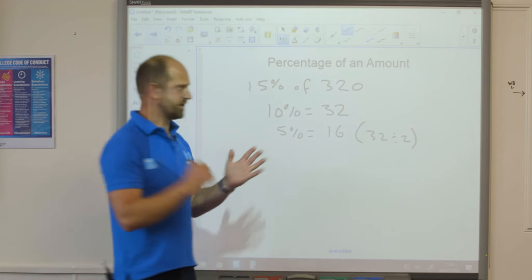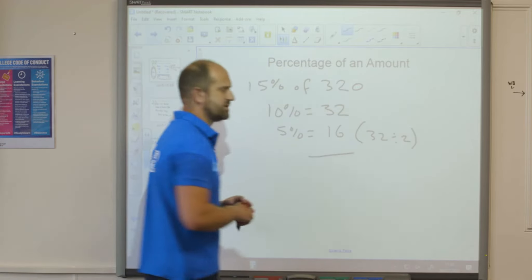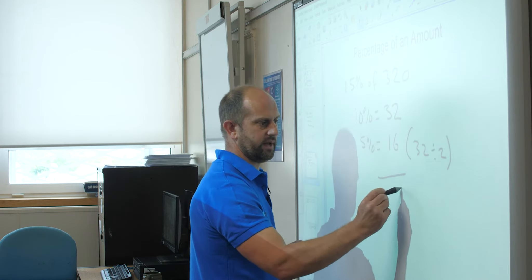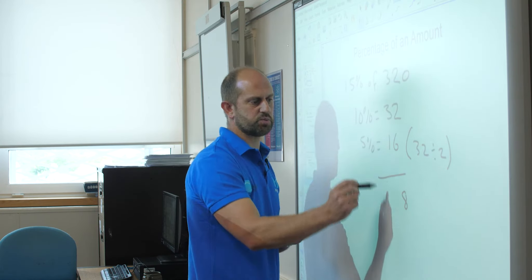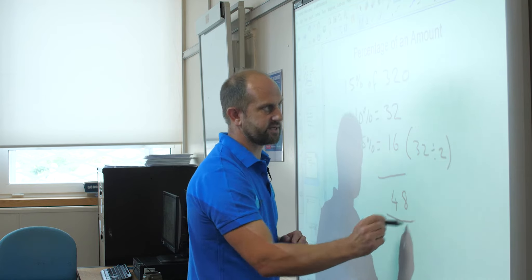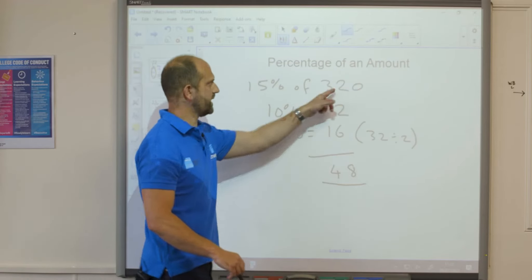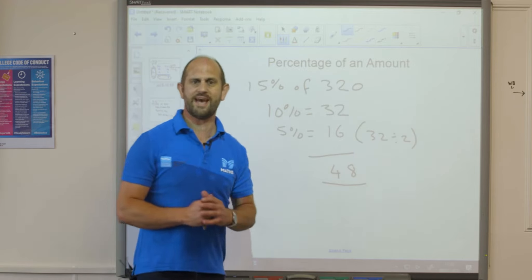So now all I need to do is add these together. So 6 plus 2 is 8, 3 plus 1 is 48. So therefore 15% of 320 is 48.